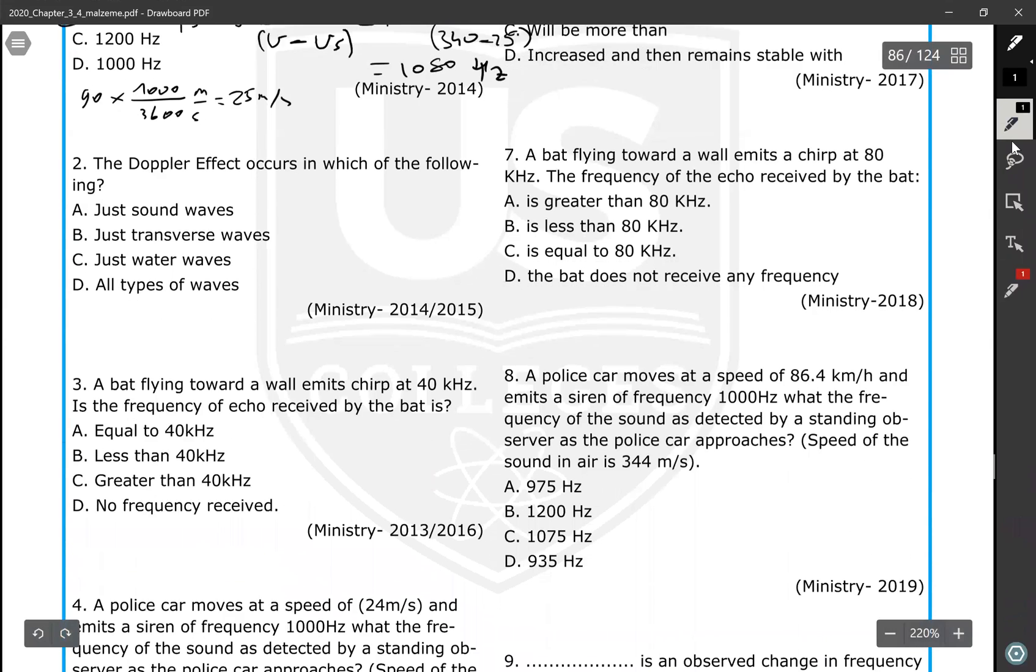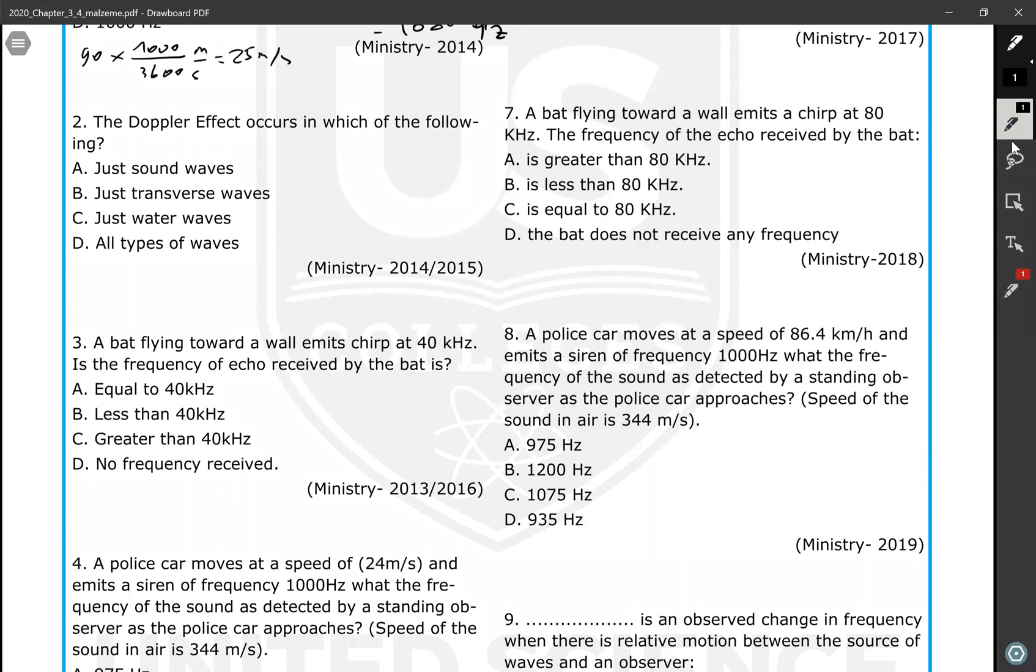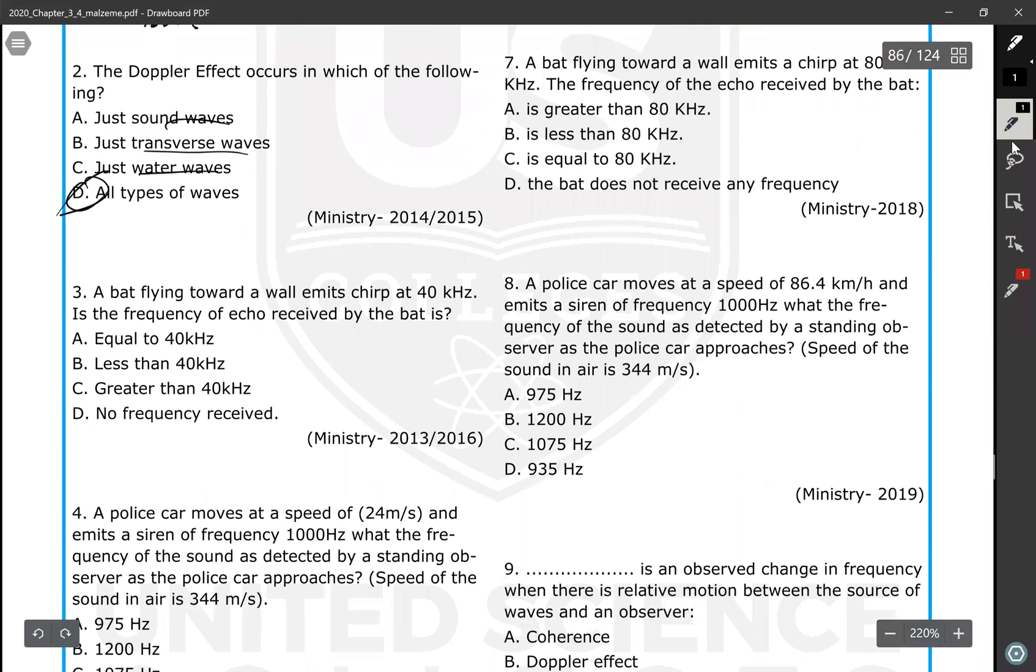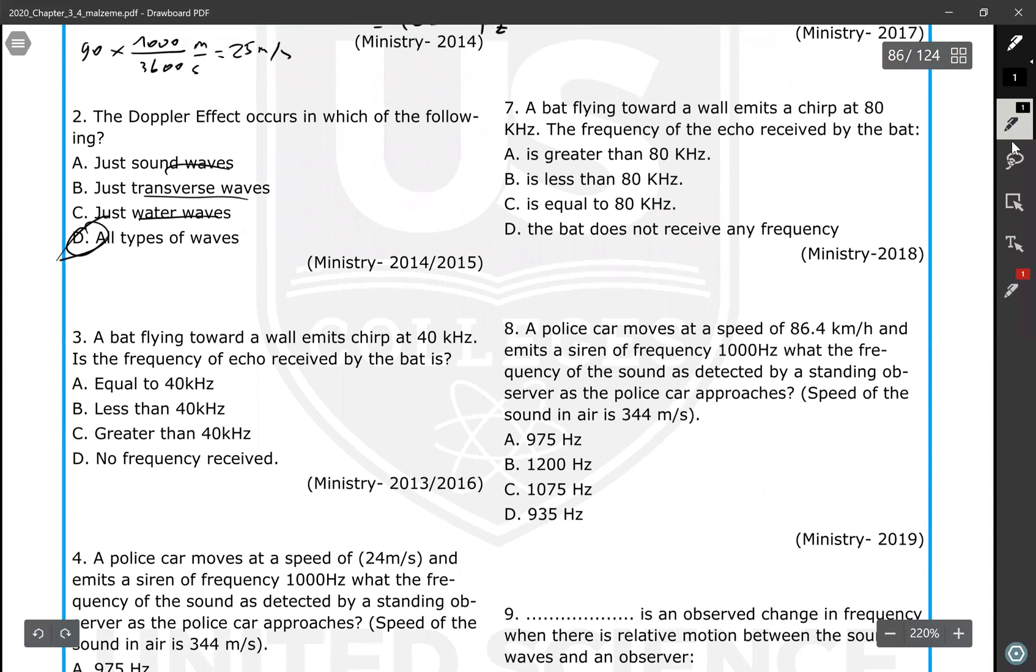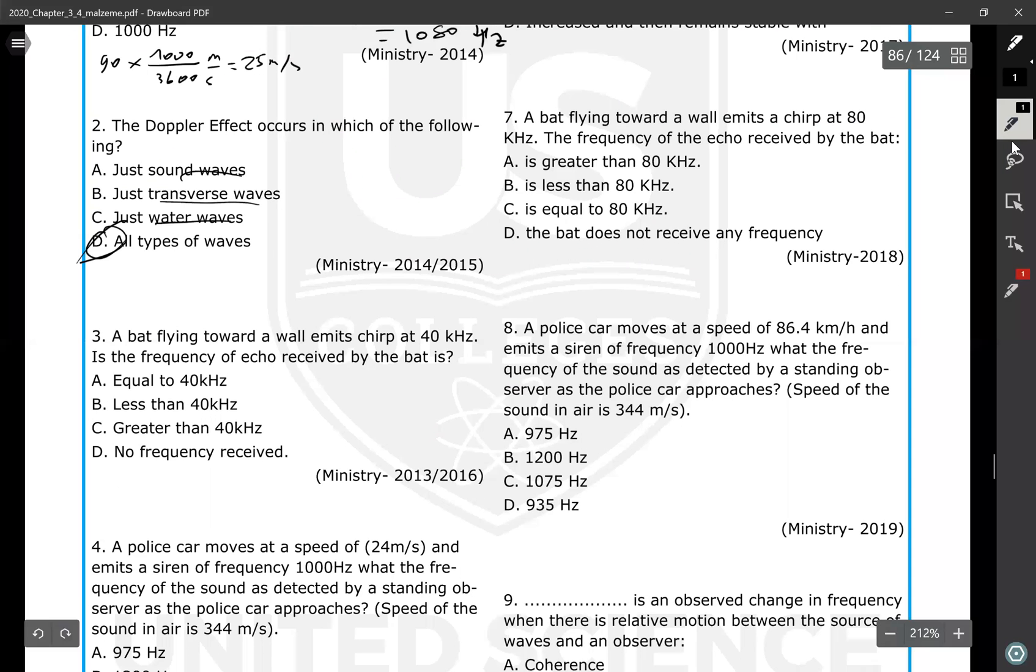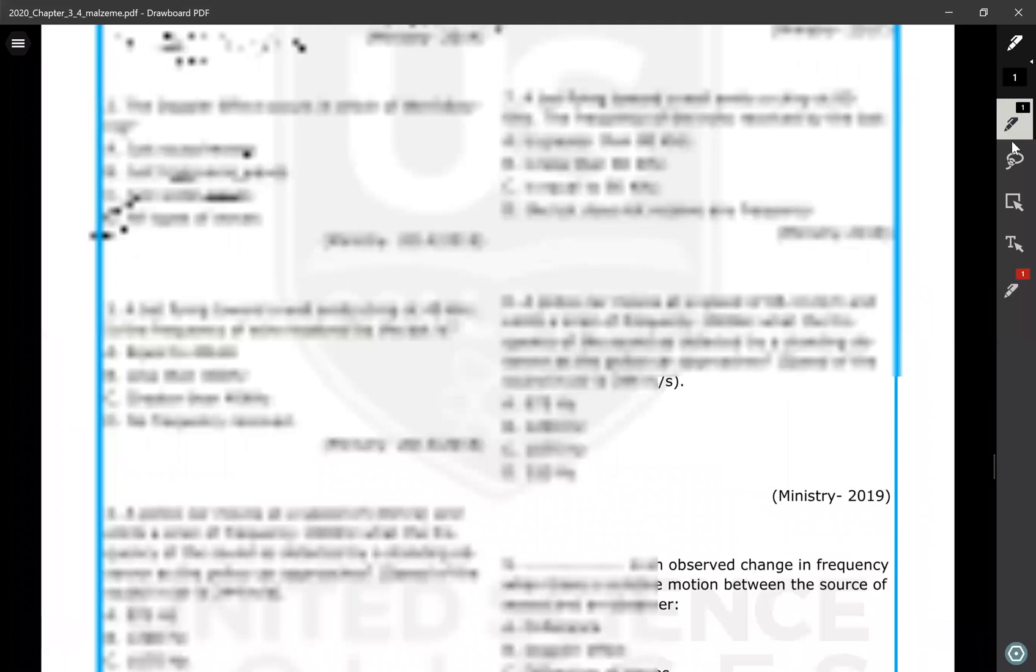Doppler effect occurs in which of the following? Sound waves, transverse waves, water waves, all types of waves. So Doppler effect can be observed in all types of waves - even it can be observed in electromagnetic waves. Hubble first discovered that the universe is expanding by change in the wavelength of light coming from the stars, and all are shifting to the red.